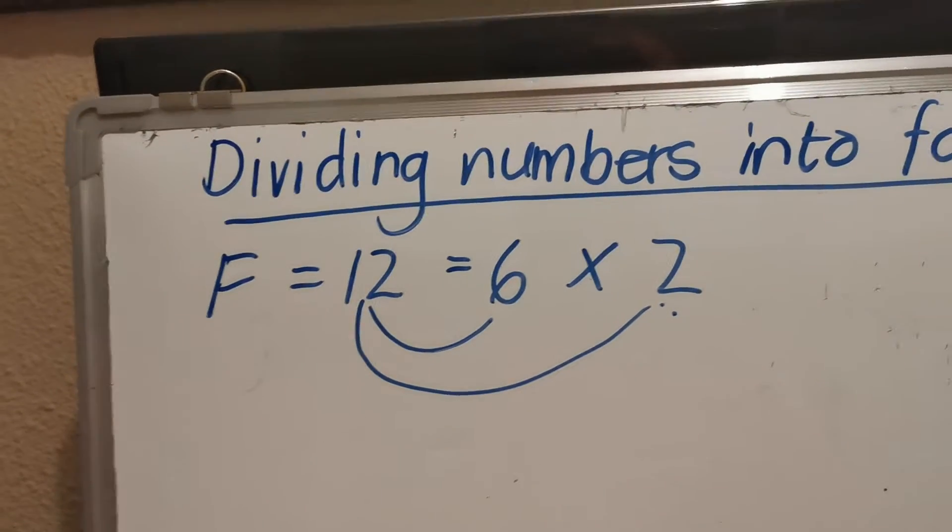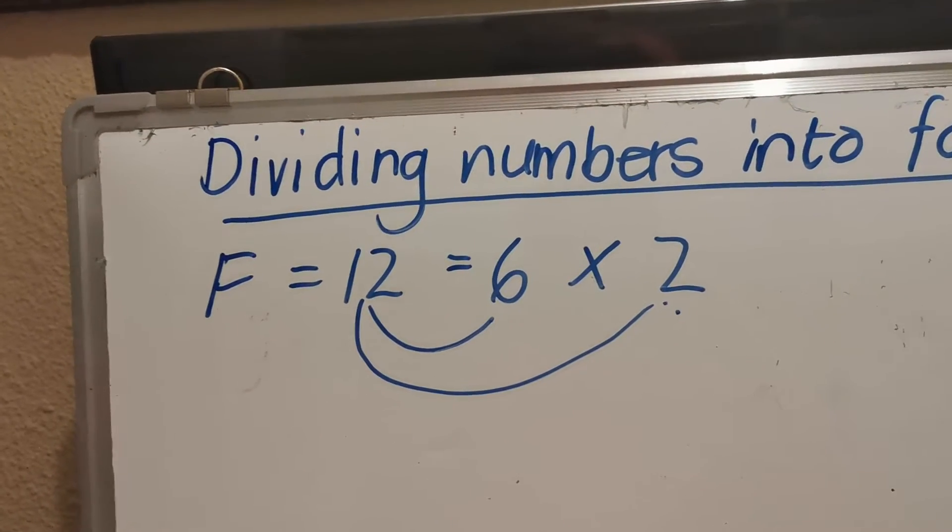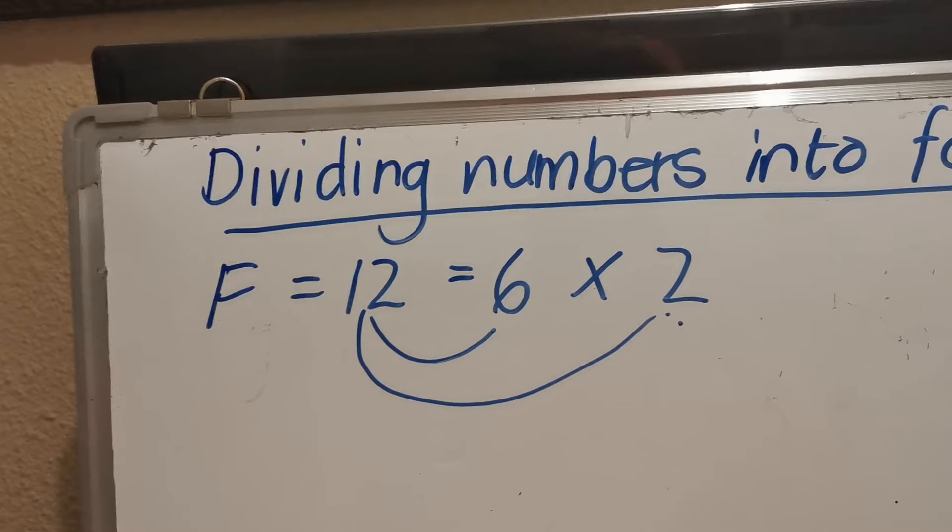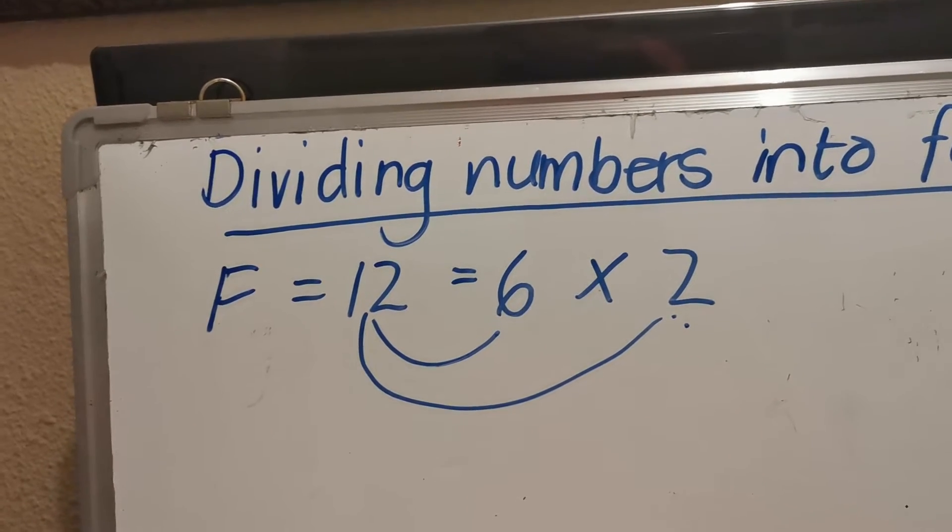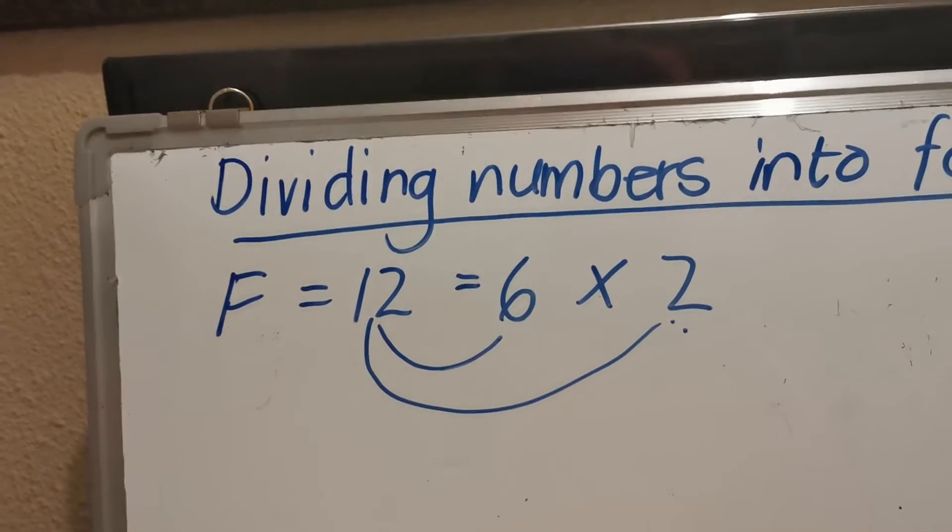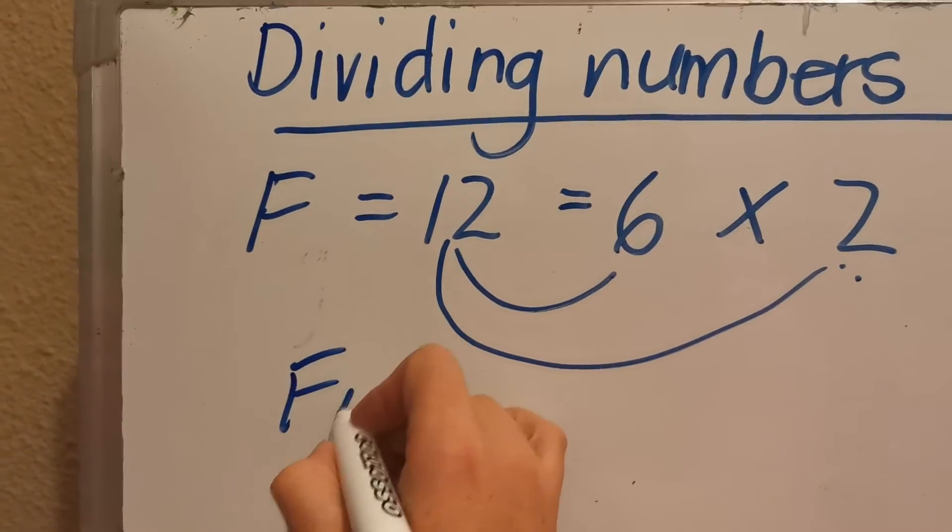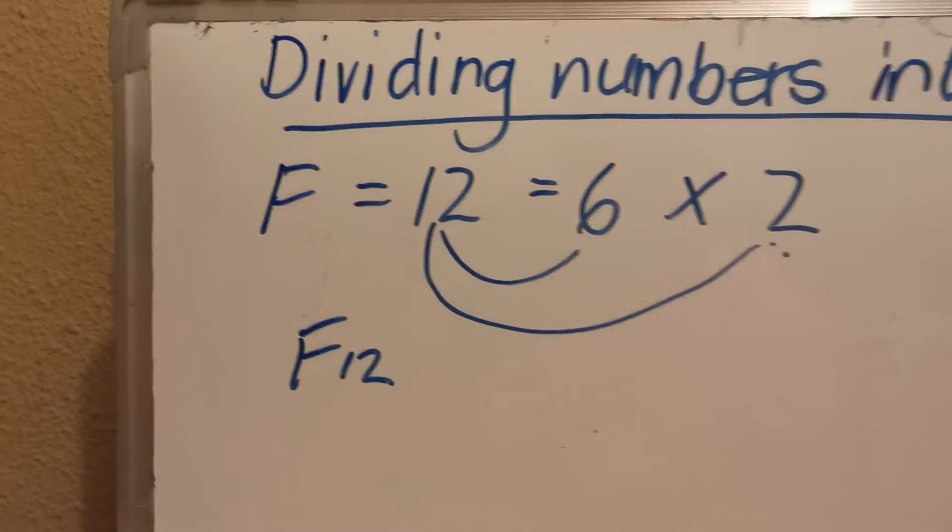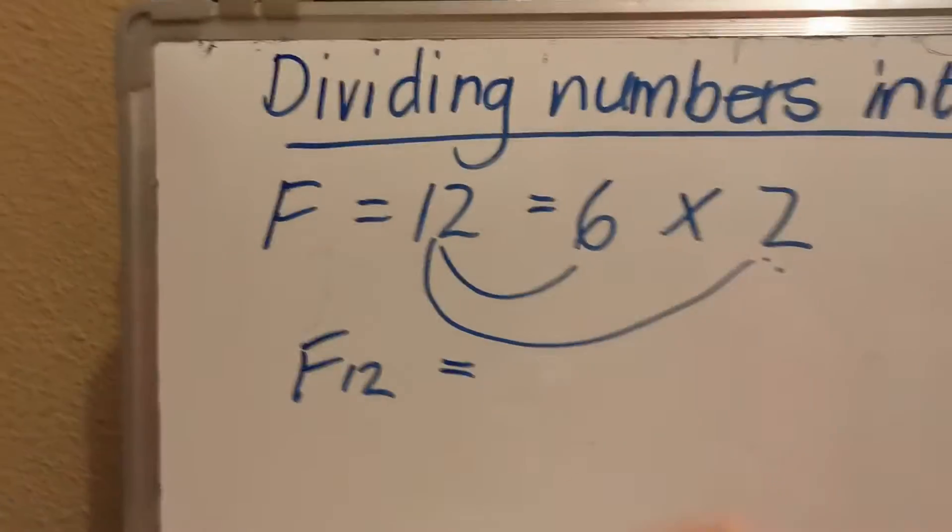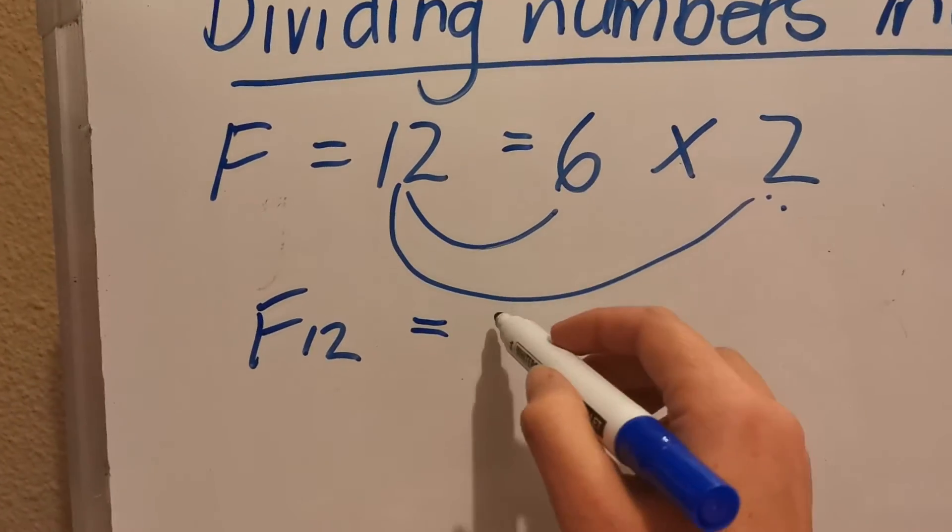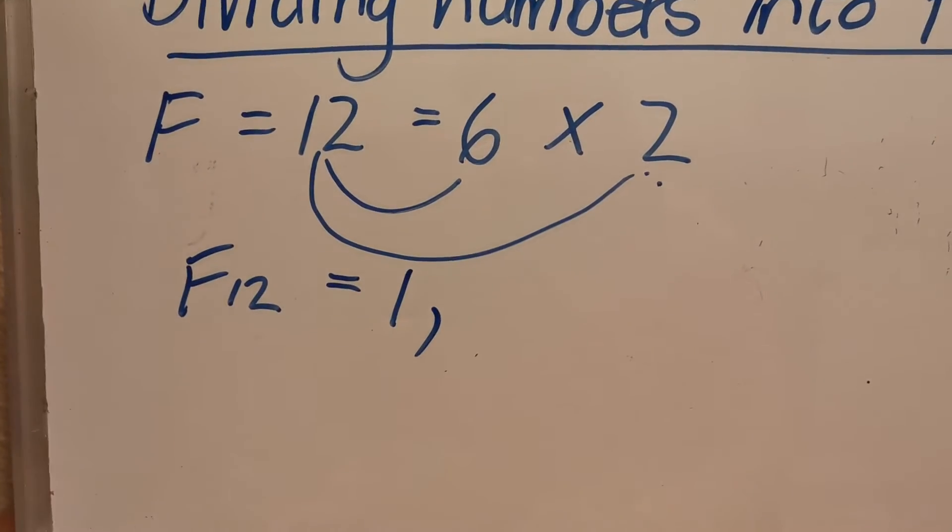To find all the factors of 12, you first divide by 1 and then keep working down using the next number that will divide exactly. So all the factors of 12, you'll write it like that. You can say 12 divided by 1 is 12, so 1 will be a factor of 12.